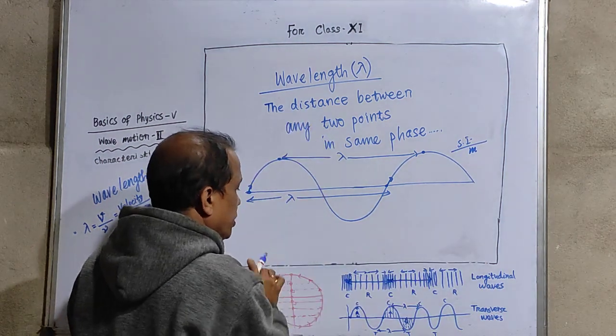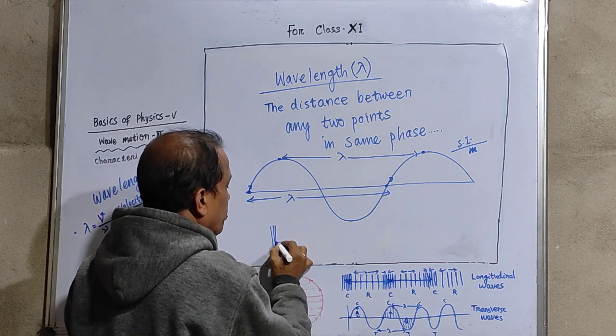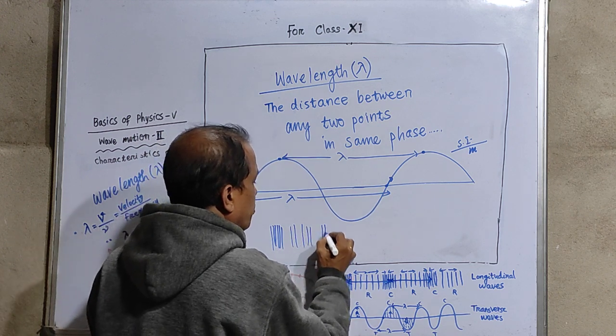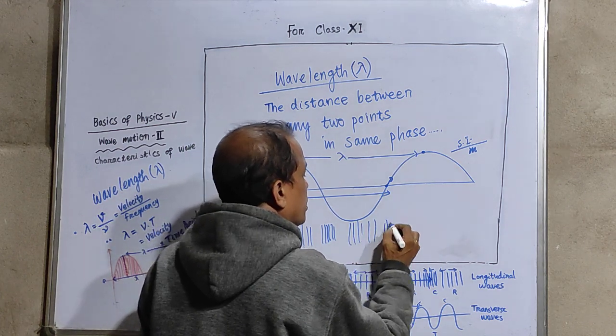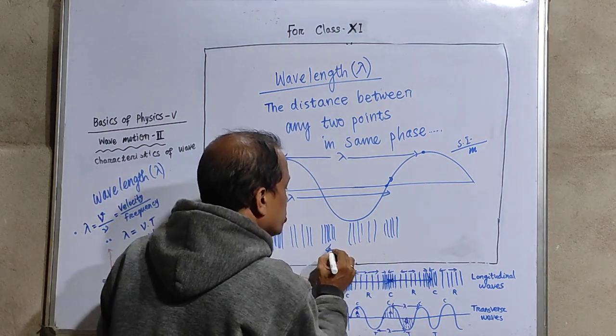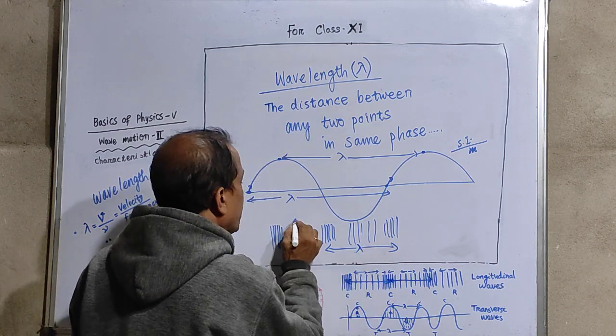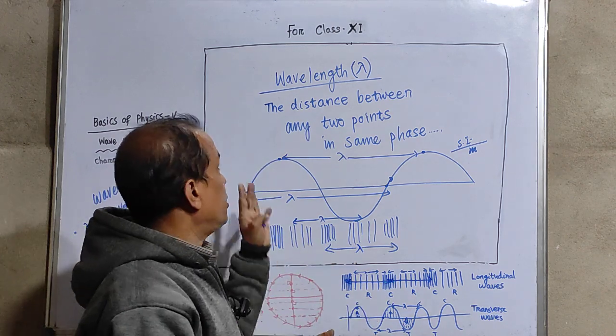And in case of a longitudinal wave, you have compressions here, again rarefactions, again compressions, again rarefactions and again compressions. So between two compressions, you have a lambda. Between two rarefactions, you have a lambda. So this is how we define wavelength.